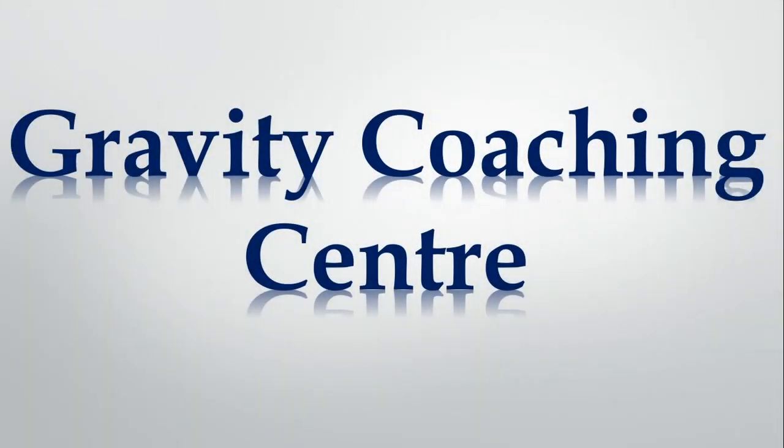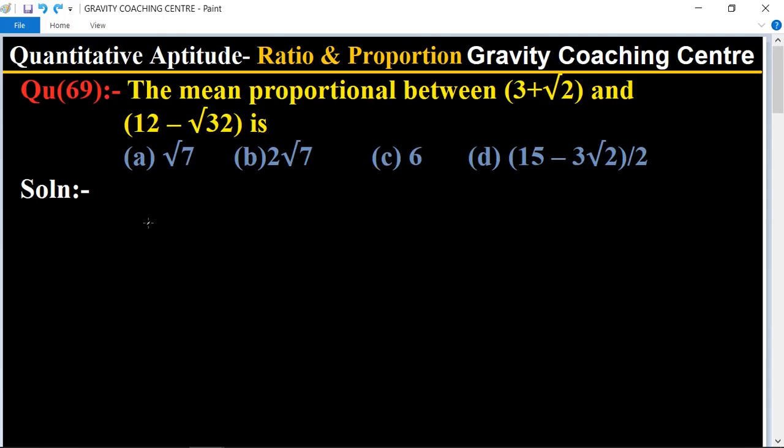Welcome to our channel, Gravity Coaching Centre. Quantitative Aptitude, chapter Ratio and Proportions, question number 69. The mean proportional between 3 plus root 2 and 12 minus